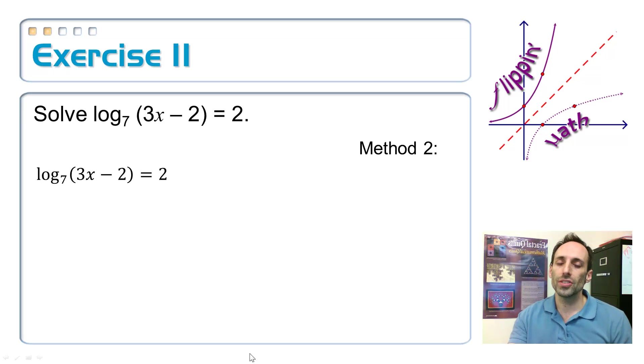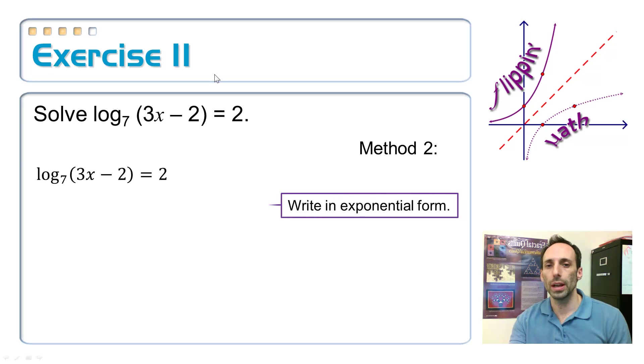So, here's the other method. The second method is, let's just take that logarithmic equation and turn it into an exponential equation. What's the base here? The base is 7. It's going to be raised to the 2 power, and it's going to be equal to 3x minus 2.